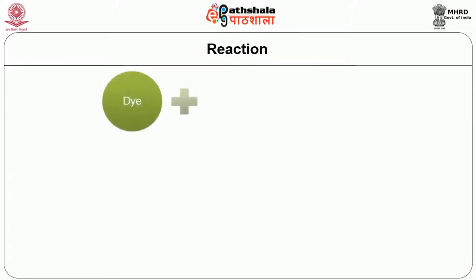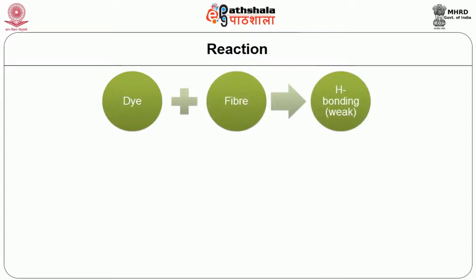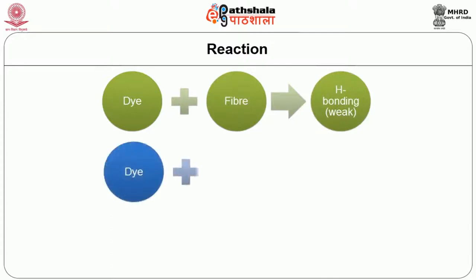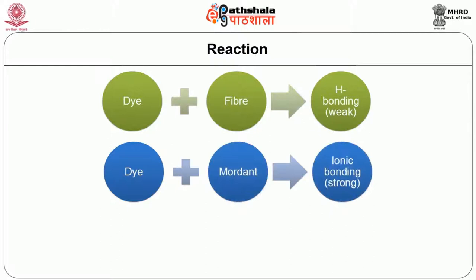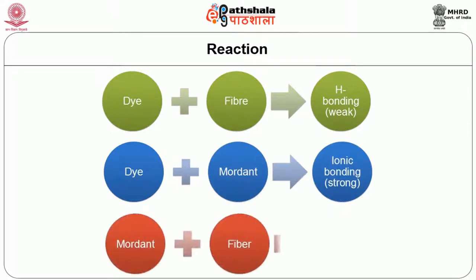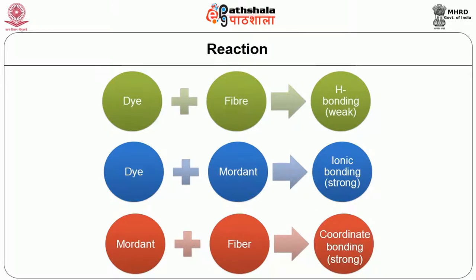The scheme of reaction of mordants with dye and fibre is as follows: the dye with fibre forms a hydrogen bond, which is weak. The dye with mordants forms an ionic bond, which is strong. Mordant and fibre form a coordinating bond, which is also very strong.